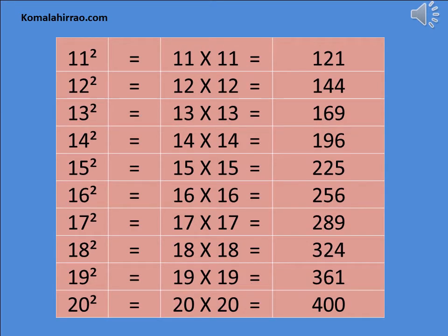11 square is equal to 11 multiply by 11 is equal to 121. 12 square is equal to 12 multiply by 12 is equal to 144. 13 square is equal to 13 multiply by 13 is equal to 169. 14 square is equal to 14 multiply by 14 is equal to 196. 15 square is equal to 15 multiplied by 15 is equal to 225.